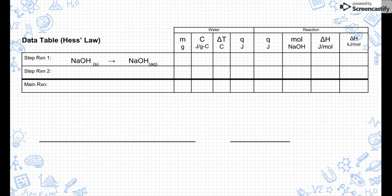So reaction number one is just solid sodium hydroxide forms aqueous sodium hydroxide. The second reaction we did was where we took that solid sodium hydroxide again and this time we dissolved it in aqueous hydrochloric acid.